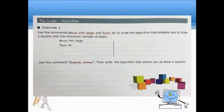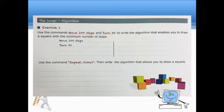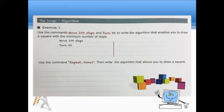Now, for further understanding, here's an exercise for us to answer. So, in exercise 1, it says, use the commands move 100 steps and turn 90 to write the algorithm that enables us to draw a square with the minimum number of steps. So, steps 1 and 2 are given already. One is move 100 steps and the second one is to turn 90. What do you think are the other steps that we need to use?